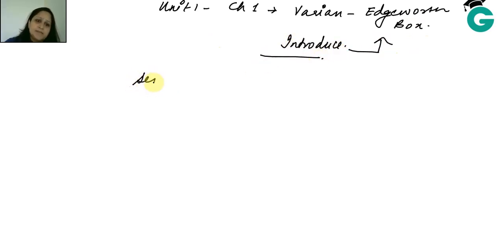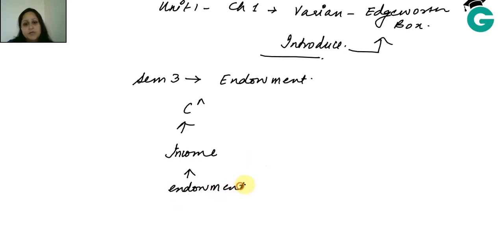So if you remember, you had studied a concept in semester 3 in which we spoke about endowment. We had said that one person wanted to do consumption, so from this point we assumed income. We assumed income to be given as soon as we were able to earn the consumer's own endowment.